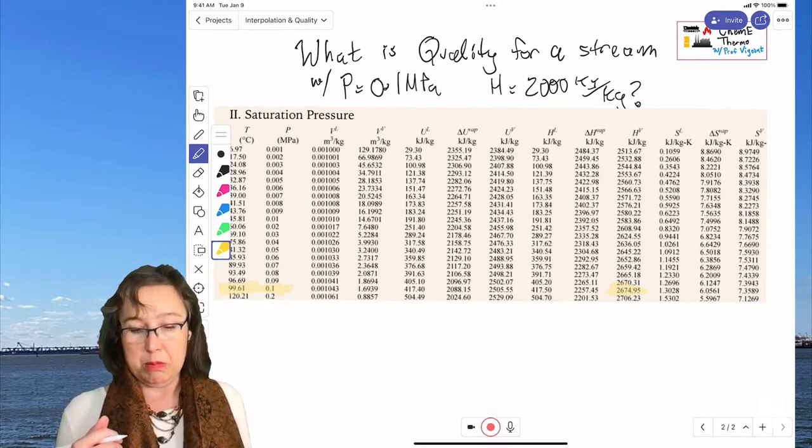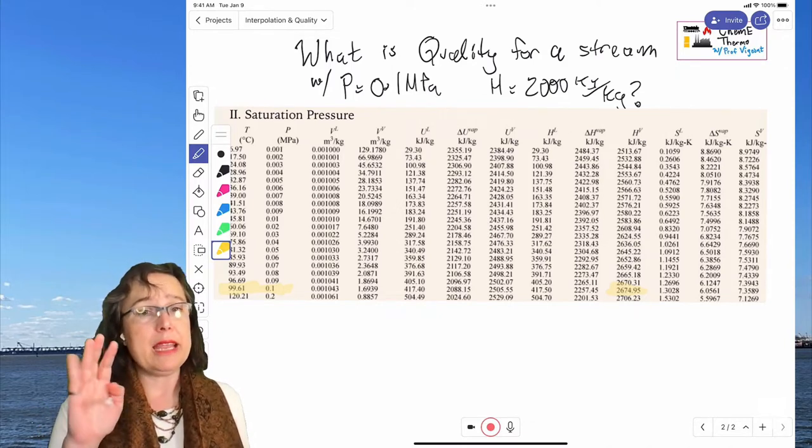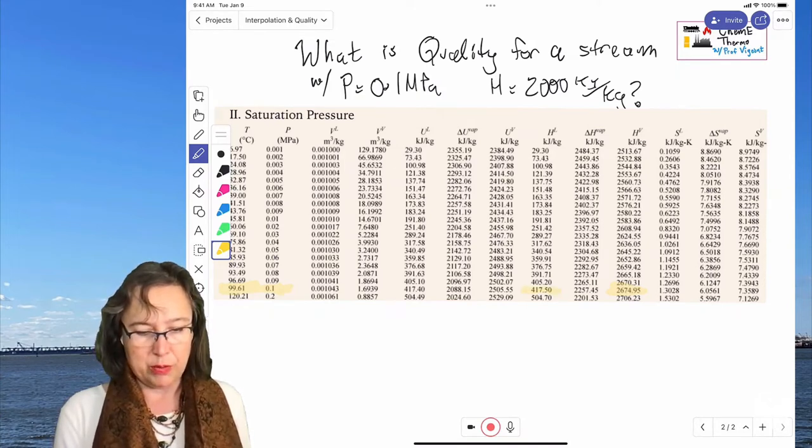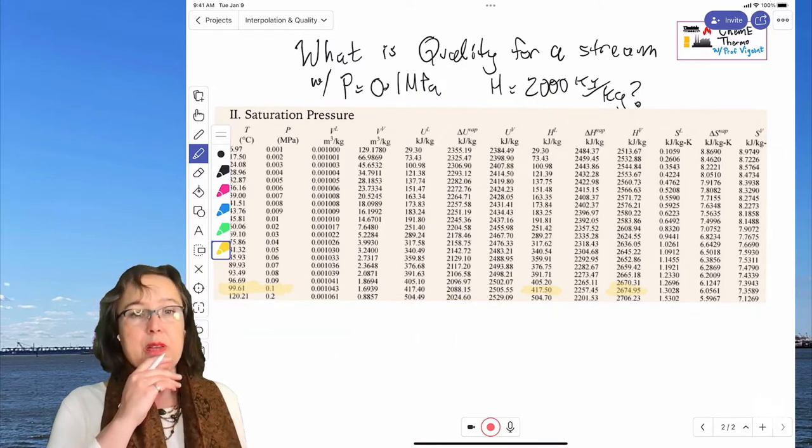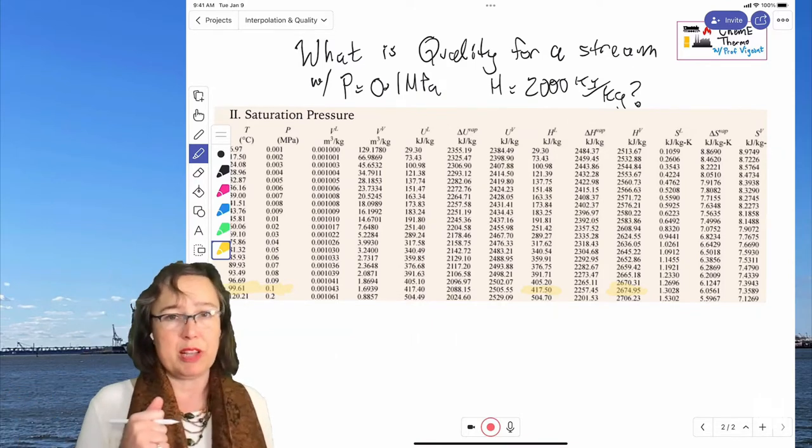And it's not, it's 2000. And so we say, okay, well, what about, is it 100% liquid? So we go across and we look at what would it be if it's 100% liquid? Well, if it was 100% liquid, the answer would be 417.5 kilojoules per kilogram.